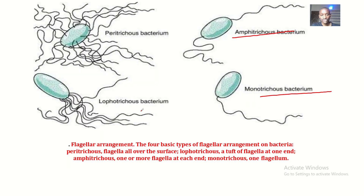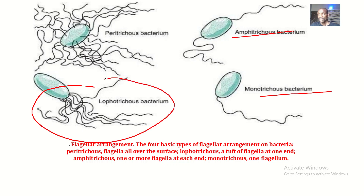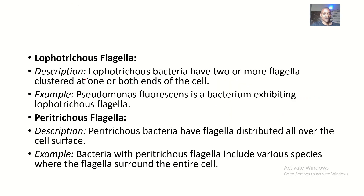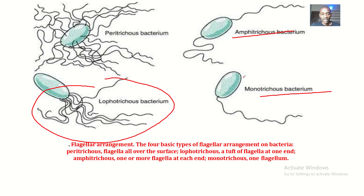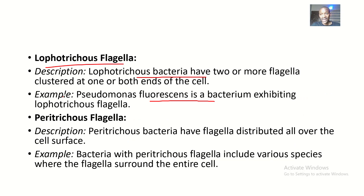Lophotritus flagella means having many flagella but clustered at one end. Lophotritus flagella have two or more flagella clustered at one or both ends of the cell. An example of a bacterium exhibiting lophotritus flagella is Pseudomonas fluorescens.